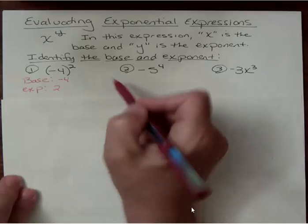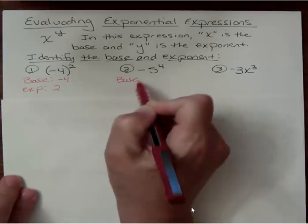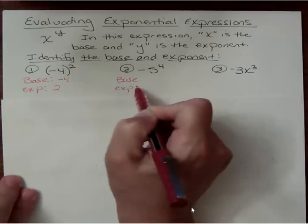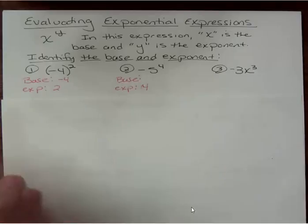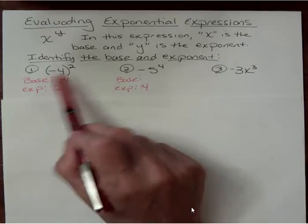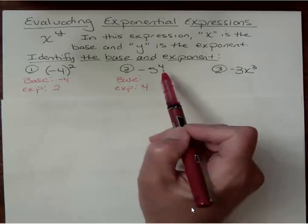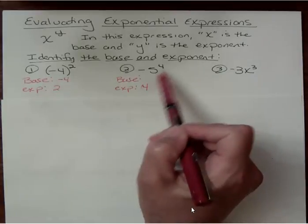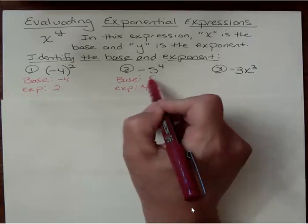In the second problem, we have a different thing, because I will tell you the exponent you probably got was 4. But what's the base? Well, the base is not negative 5, because we don't have parentheses around it. The power can only affect what it touches directly. So the base is just 5.